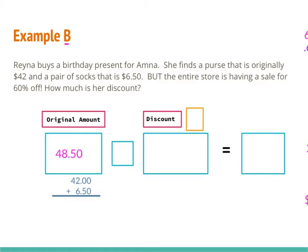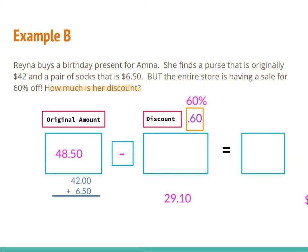Since we're talking about a discount, I know that's going to be a subtraction problem. To figure out my discount, it's 60%, but I need to turn it into a decimal — 60% as a decimal is 0.60. So I'm going to multiply $48.50 times 0.60, and when I do that I get $29.10. That is not what the problem asked though — the problem asked how much is her discount? I've found the discount, which is $29.10, and that is my final answer.